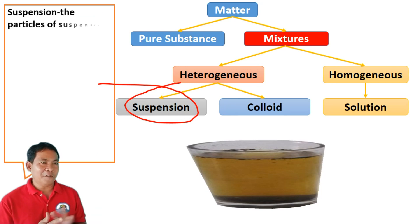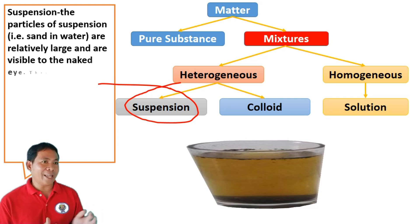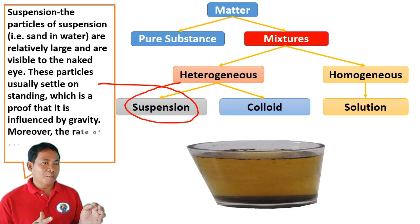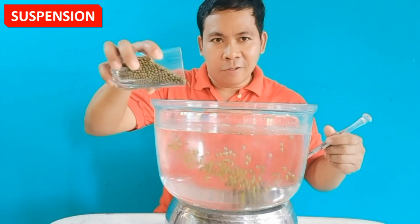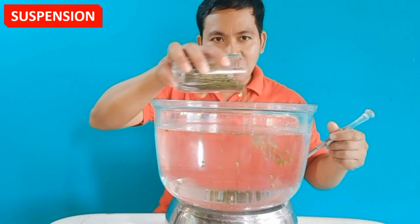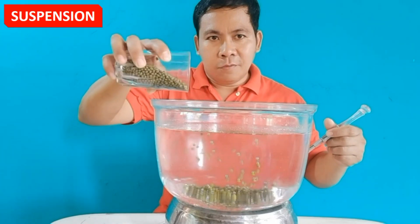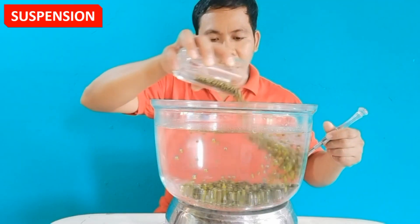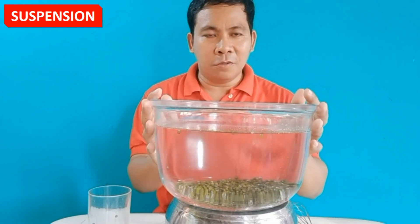For suspension, the particles — for example, sand and water — are relatively large and visible to the naked eye. These particles usually settle on standing, which proves they are influenced by gravity. The rate of settling is dependent on particle size. We can see the particles settle down at the bottom of the container because the particles are big enough to settle. This mixture is called a suspension.